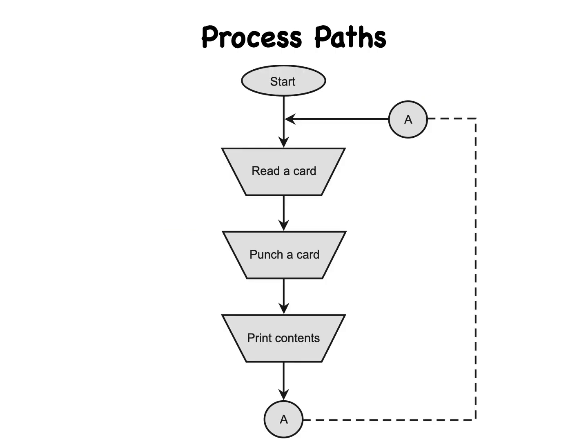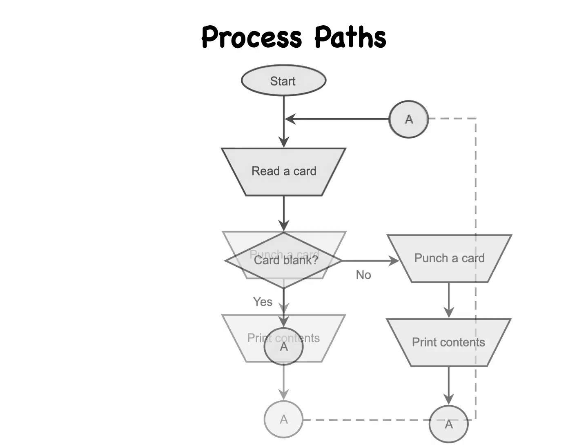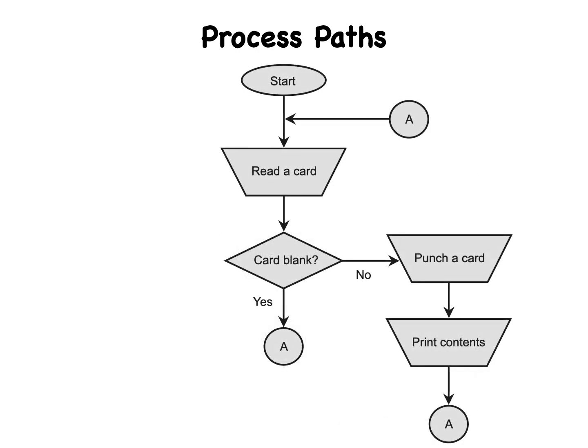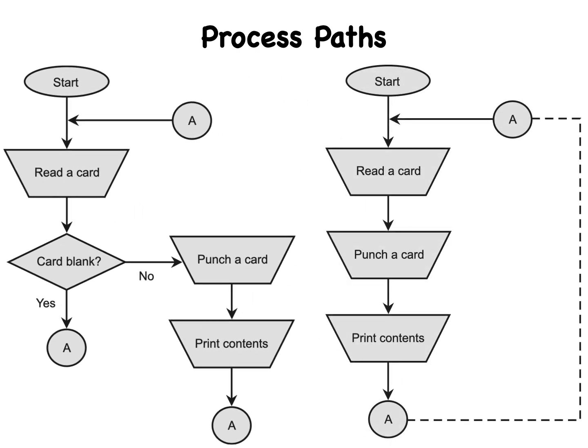Looking at the flow chart for duplicating punched cards, suppose that you want to change the card punching program so that the computer skips blank cards and duplicates only those cards with some holes in them. Because the computer must make a decision about each card, you'll need to include a decision block in the flow chart. Except for the decision block, this shows the same process as the previous process path does.